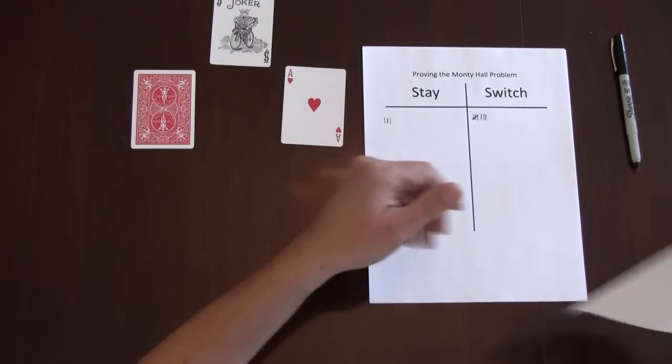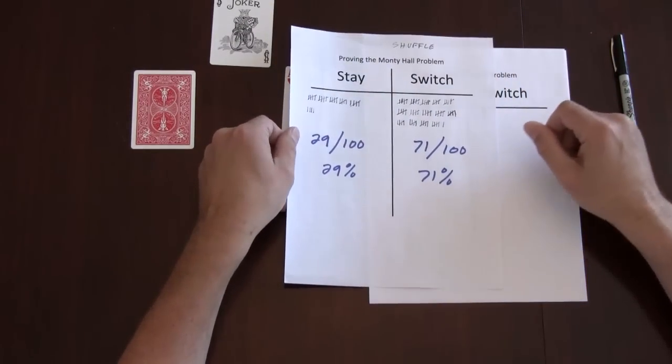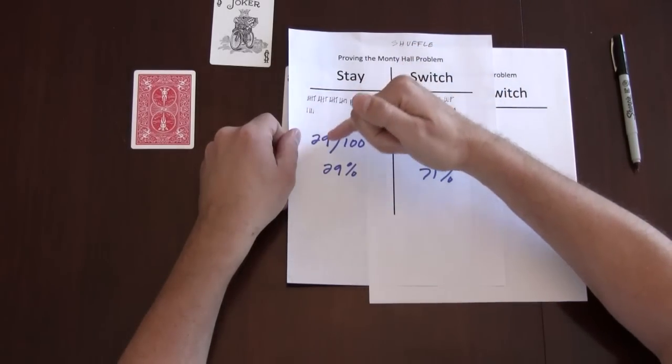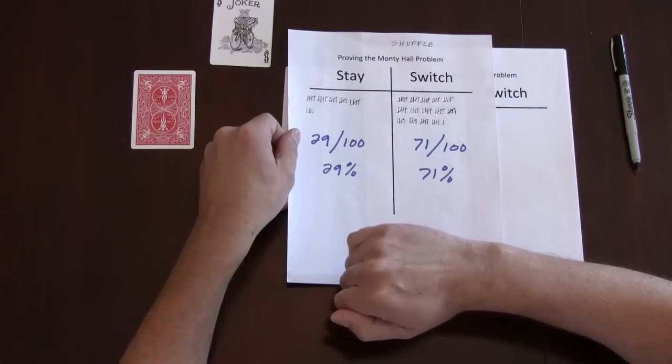After we do this 100 times, you'll get your results. Here's a run that I made where if I stayed 29 out of 100 times or 29% I got the car.